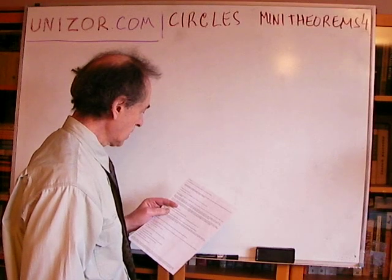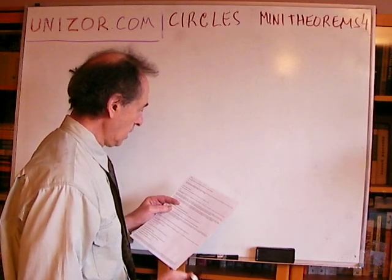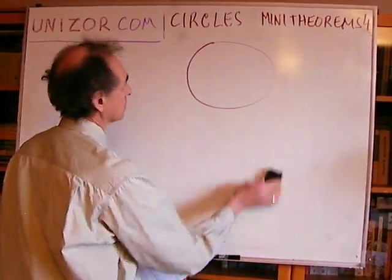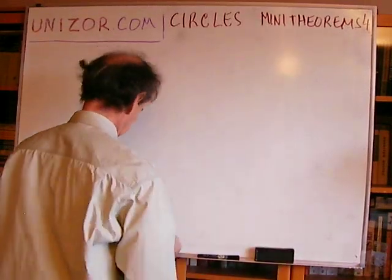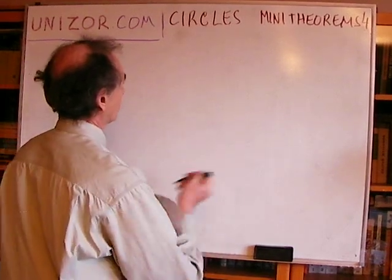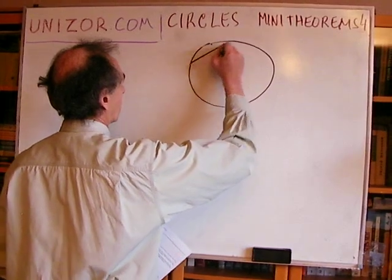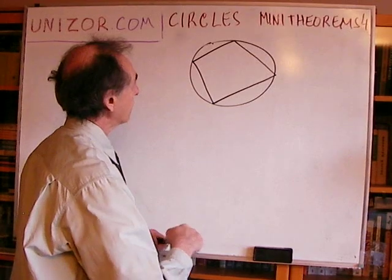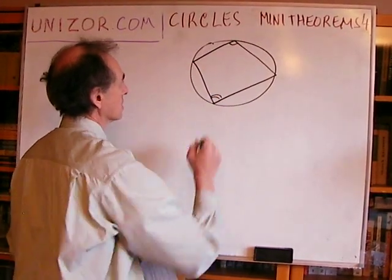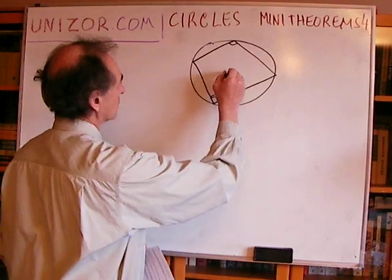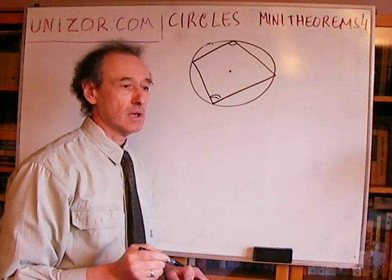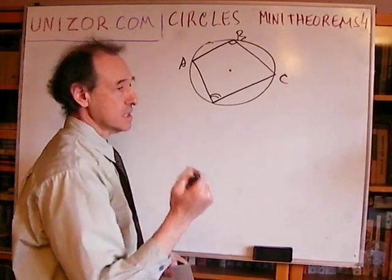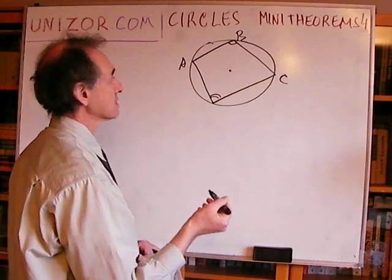Okay, start from the beginning. The sum of opposite angles in a convex quadrangle inscribed into a circle is equal to 180 degrees. That doesn't seem to be difficult. You have this circle and a convex quadrangle inscribed in it. We have to prove that the sum of opposite angles is equal to 180 degrees. As you know, any inscribed angle in the circle — for instance, angle ABC — is equal to half of the central angle supported by the same arc.